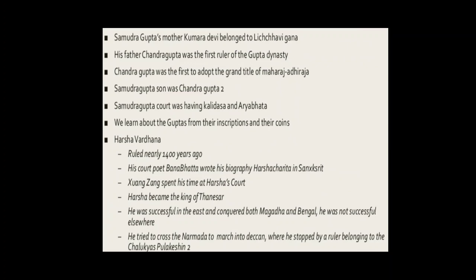Harshavardhana's brother-in-law was the ruler of Kanauj, which you have seen in Map 7, and he was killed by the ruler of Bengal. Harshavardhana took over the kingdom of Kanauj and then led an army against the ruler of Bengal. Although he was successful in the east and conquered both Magadha and Bengal, he was not as successful elsewhere. He tried to cross the Narmada to march into the Deccan, but was stopped by a ruler belonging to the Chalukya dynasty — Pulakesi II.